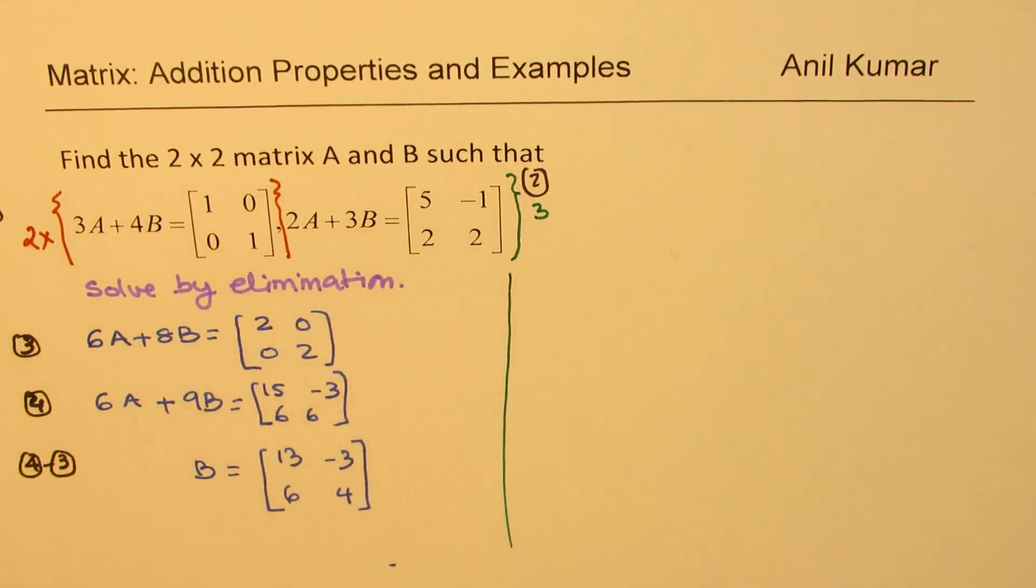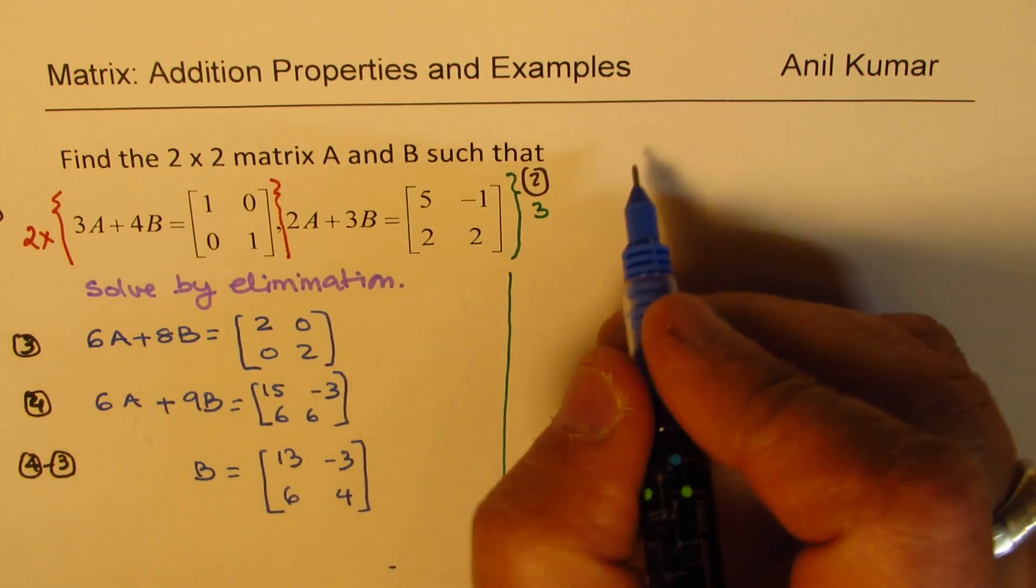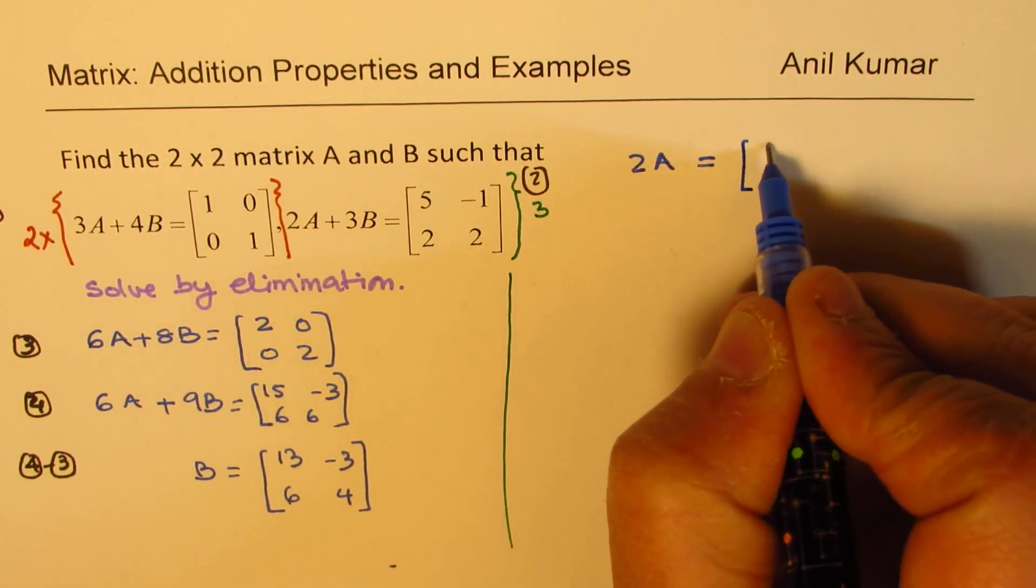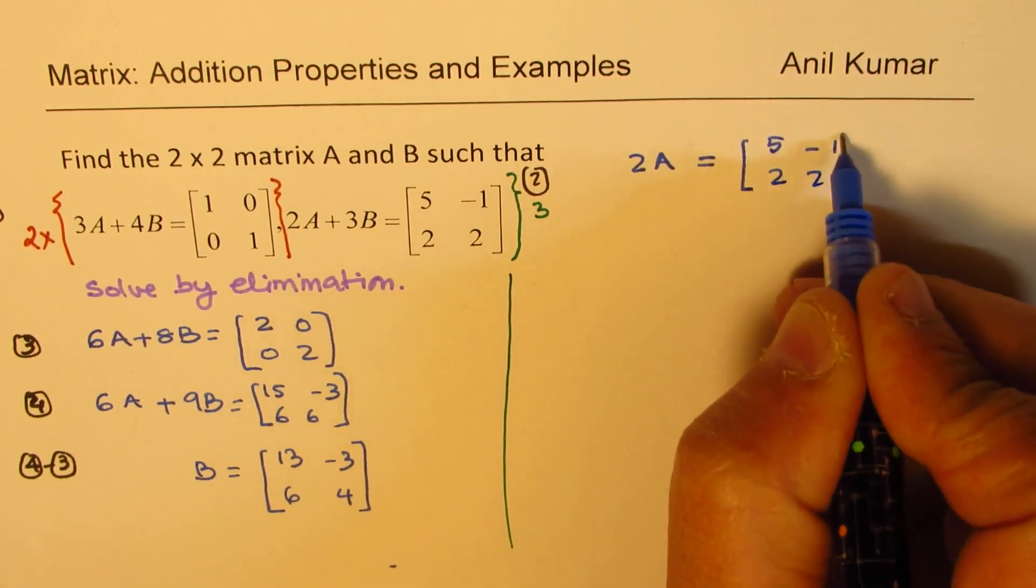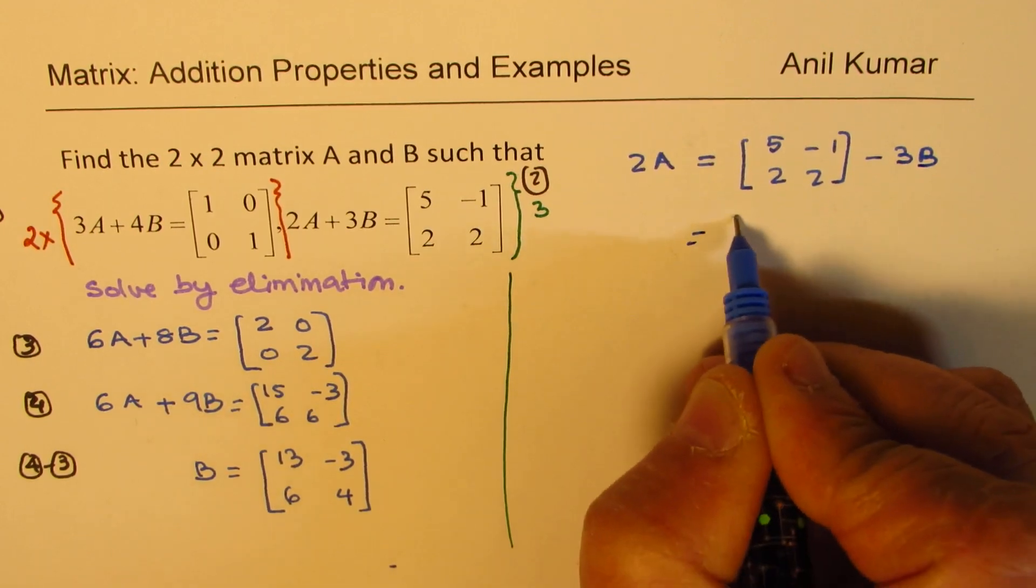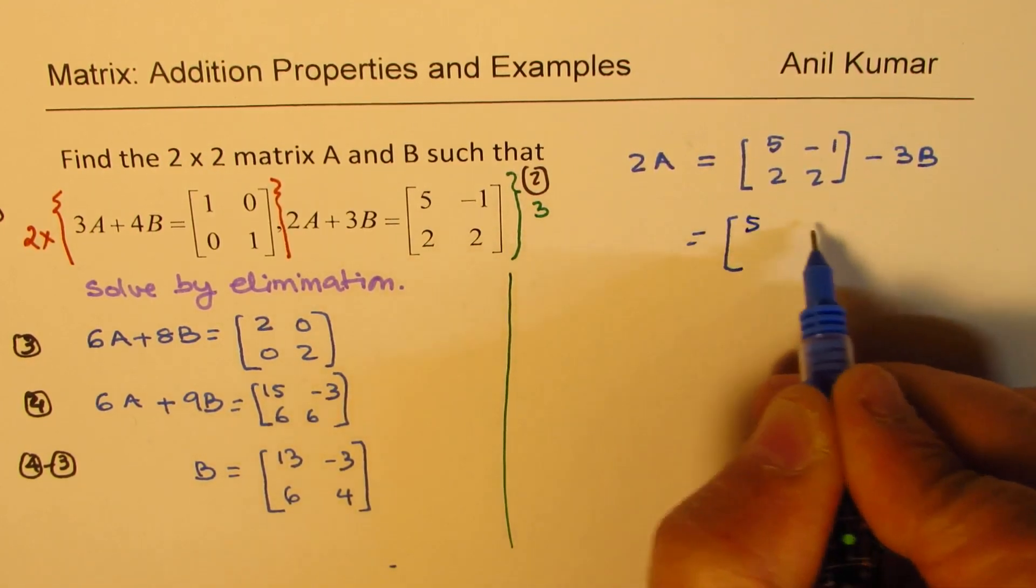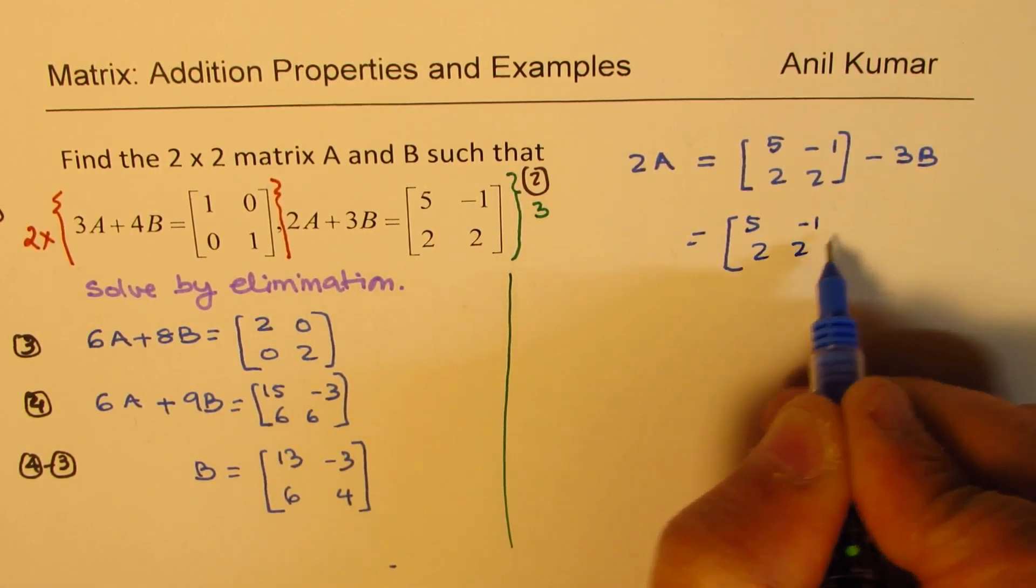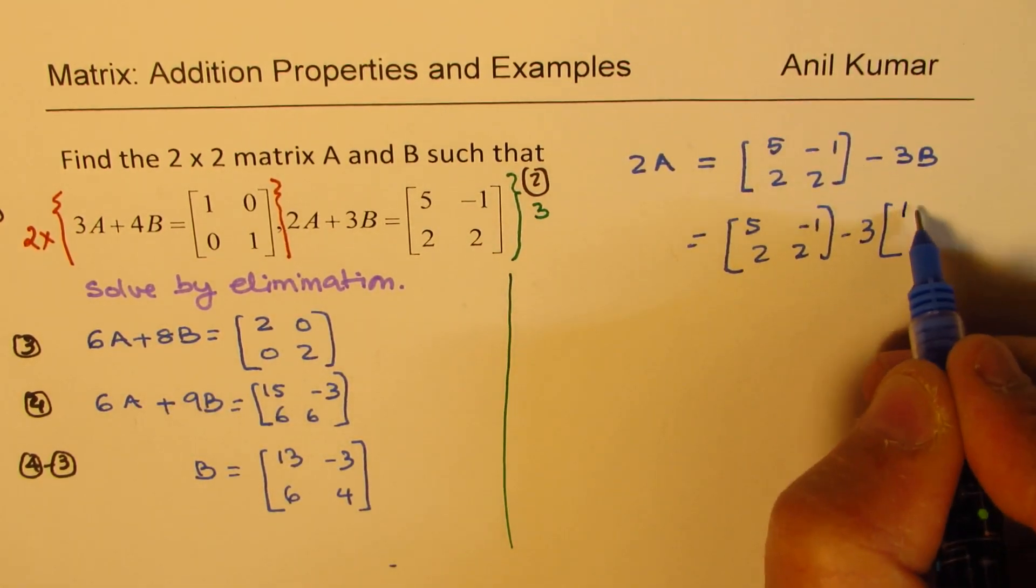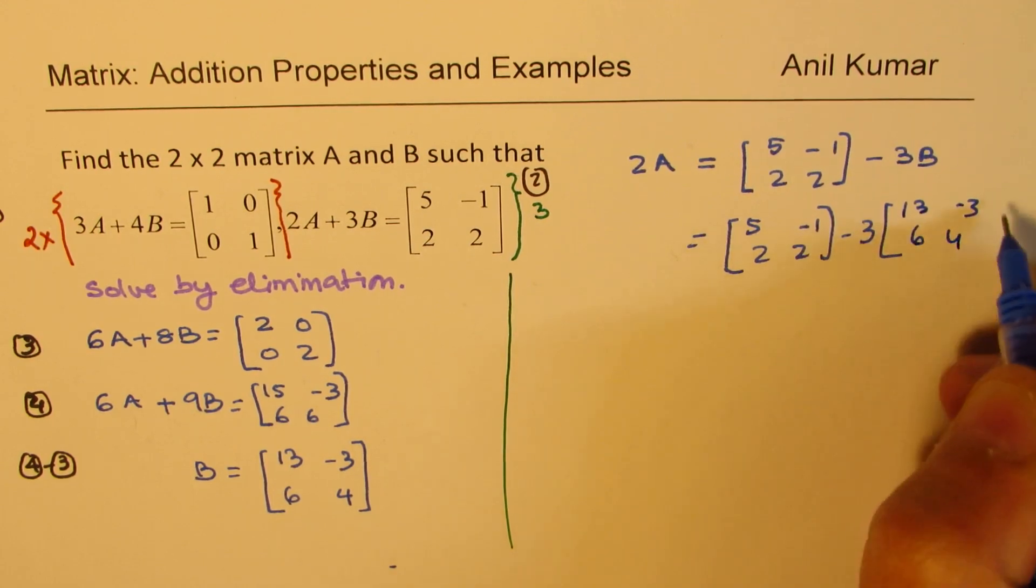Using our second equation we can find the value of A. So we have 2A equals [5 -1; 2 2] minus 3B. So now we can write this as [5 -1; 2 2] minus 3 times the matrix B which is [13 -3; 6 4].